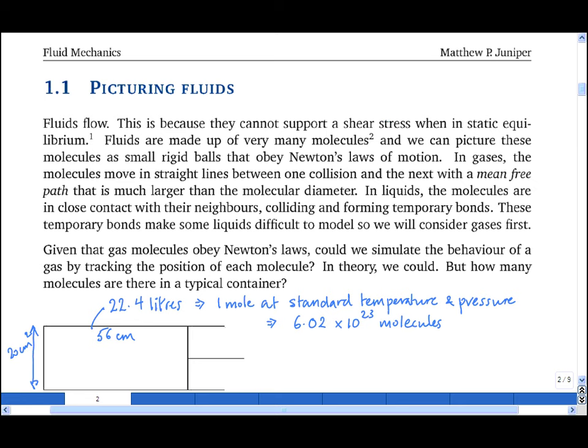Now if you take every single one of those hairs and chop it into one thousand little pieces, and then take every single one of those pieces and chop it into a million different pieces, then you have around 6 times 10 to the 23 pieces of hair.